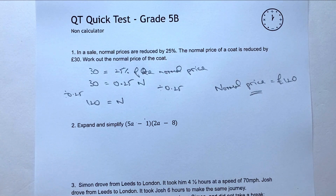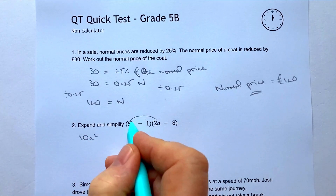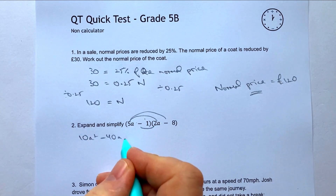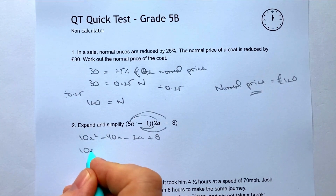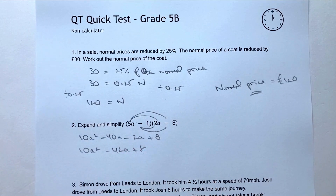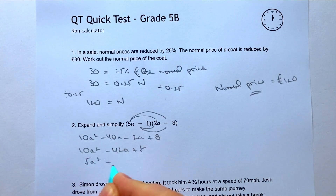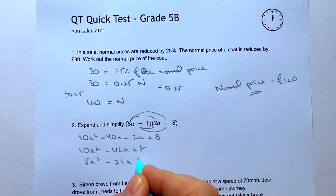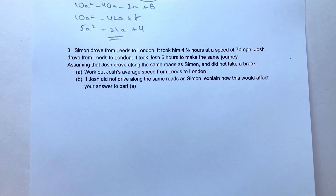Question two: expand and simplify — very popular in GCSE non-calculator questions. Using the 'crab claw' method: (10a - 2)(a - 4) gives 10a² minus 40a minus 2a, and minus times minus is positive, so plus 8. Tidying up: 10a² - 42a + 8. Since all terms are even, dividing through by 2 gives 5a² - 21a + 4.